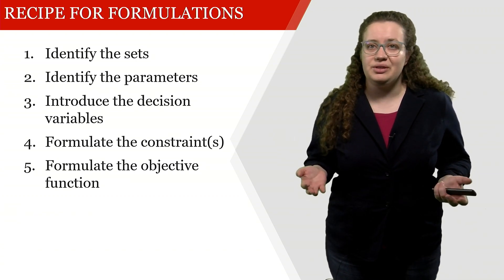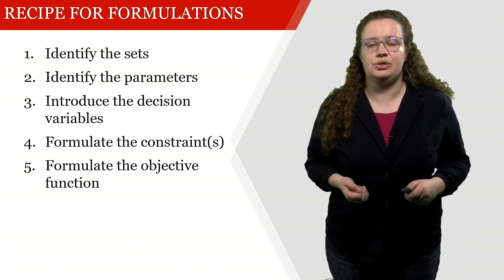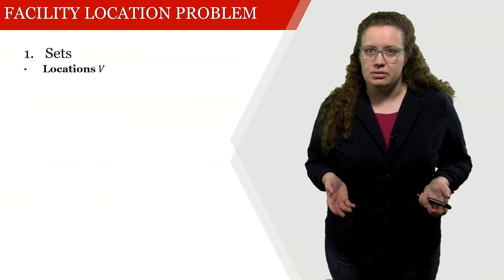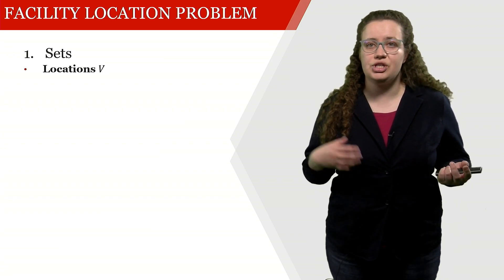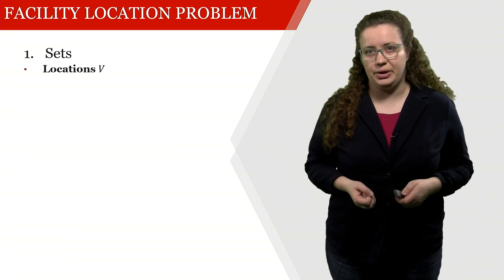Let's look into what kind of sets we're needing in this problem. First of all, we have a facility location problem or a location problem, so we obviously need some locations, a set V. And these locations comprise both origin and destination locations, so both sawmills and the workshops.